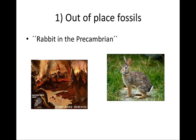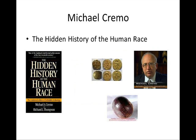Number one: out of place fossils. Evolutionists usually say that a rabbit in the pre-Cambrian will falsify evolution. Well, we don't have rabbits in the pre-Cambrian, but we do find a whole bunch of out of place fossils. For example, Michael Cremo, in his book The Hidden History of the Human Race, reports hundreds of fossils and man-made artifacts dated much older than what evolution predicts — according to your own dating methods. Some of these artifacts are hundreds of millions of years old.